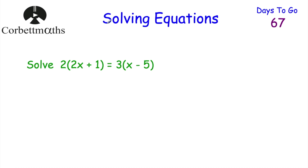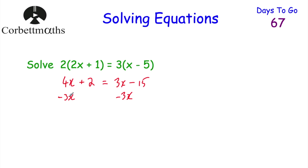Now we have an equation with letters on both sides and brackets on both sides: 2 brackets 2x plus 1 close brackets equals 3 brackets x minus 5 close brackets. First, expand the brackets. 2 times 2x is 4x, and 2 times 1 is 2, so the left-hand side is 4x plus 2. On the right-hand side, 3 times x is 3x, and 3 times 5 is 15, giving 3x minus 15. Now, take away 3x from both sides: 4x minus 3x is x, leaving x plus 2. On the right-hand side, 3x minus 3x is 0, leaving minus 15. Then take away 2 from both sides: x equals minus 17. Well done.